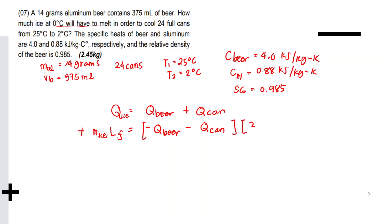Note: this is not energy-in equals energy-out. The equation simply asks: how much heat must the ice absorb to cool the beer and can? So we equate what is absorbed to what is released — that's all it is.